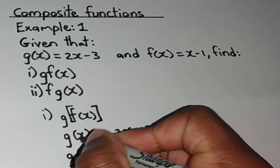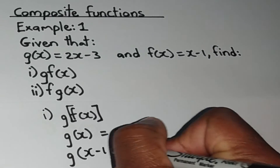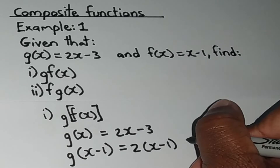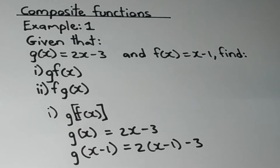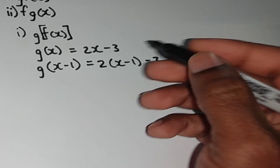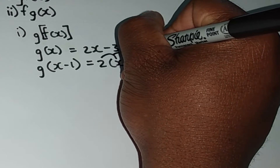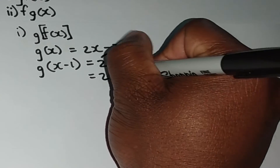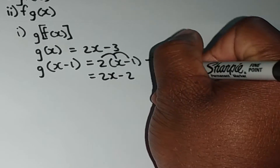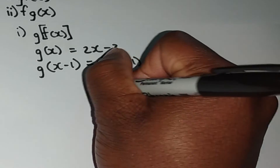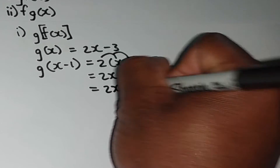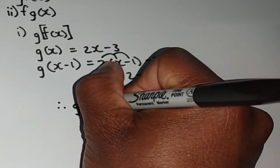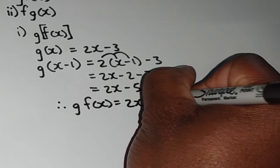So right away I'm going to replace this x with the f of x function, which is x minus 1. So wherever I have x, I'm going to replace the x with x minus 1, and I still have the minus 3 just the same. Now I can use the distributive law to expand this bracket: 2 times x gives 2x, and 2 times negative 1 gives negative 2. I still have the minus 3 out here. Now we can simplify: negative 2 minus 3 is minus 5. Therefore, g of f of x is equal to 2x minus 5.